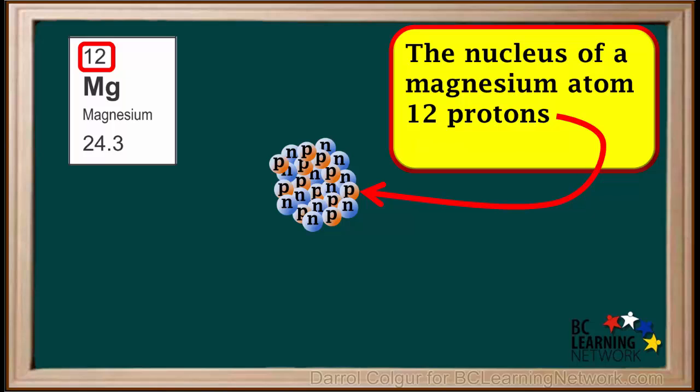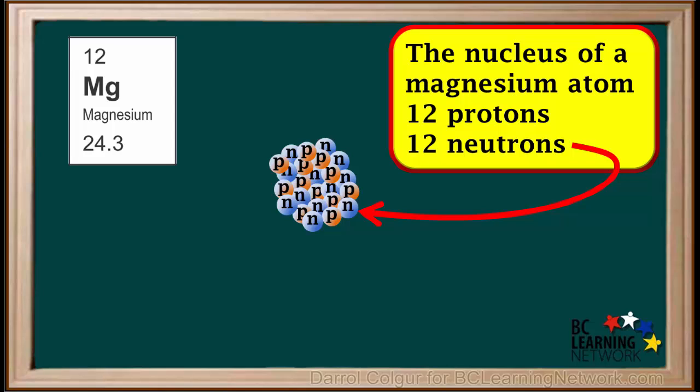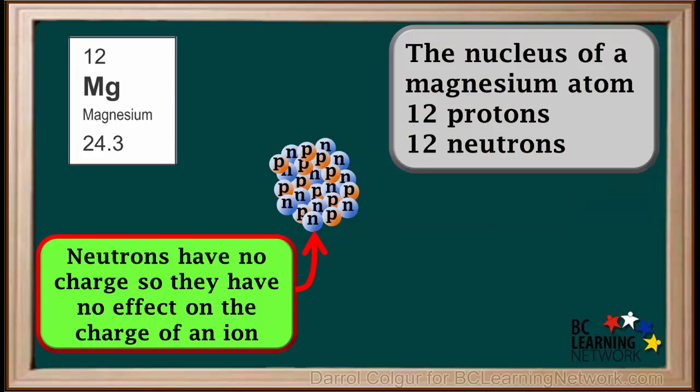12 protons are drawn in this model here. The nuclei of most magnesium atoms have 12 neutrons. Just be aware that the number of neutrons in a nucleus is not always equal to the number of protons. Neutrons have no charge, so the number of neutrons an atom contains has no effect on the charge of ions that form.